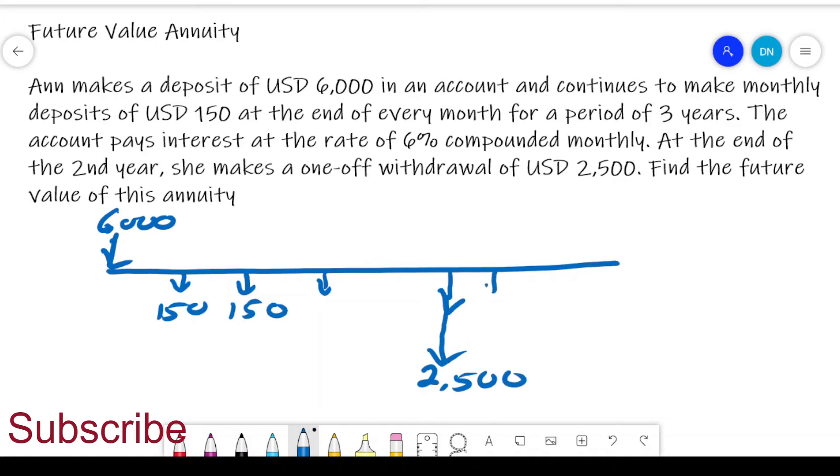But remember, she continued with her deposits until the last time period that we have given. So what's the relationship between this time and this time? This is two years, and then we have a period of one year from year two to year three.